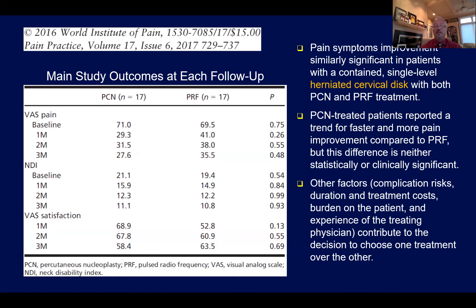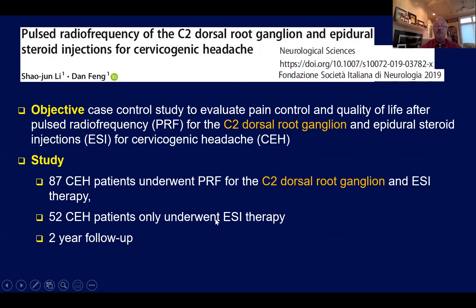When comparing percutaneous nucleoplasty to pulsed radio frequency for contained herniated discs at single levels, nucleoplasty patients reported a trend for faster and greater pain relief. However, the difference was neither statistically nor clinically significant. Percutaneous nucleoplasty did not outperform pulsed radio frequency of the DRG, suggesting that pulsed radio frequency may have similar efficacy to nucleoplasty procedures.